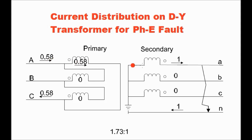These are the three case studies for fault current distribution in a delta-star transformer: three-phase fault, phase-to-phase fault, and phase-to-earth fault. If you like this video, please subscribe to the channel and press the bell button for notifications of future videos. Thank you for watching.